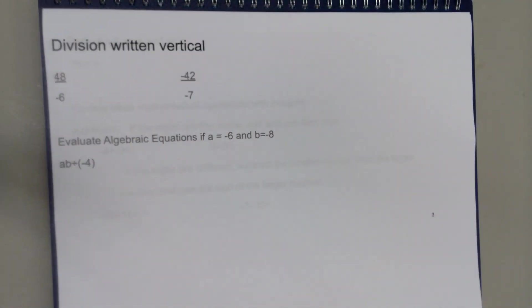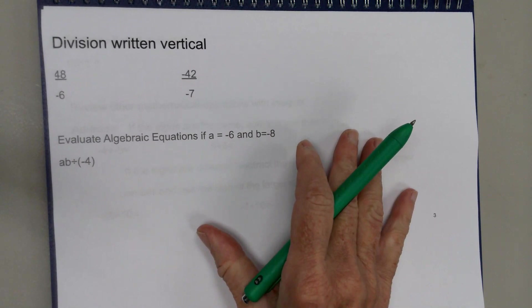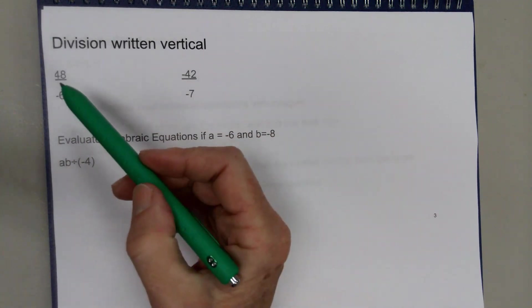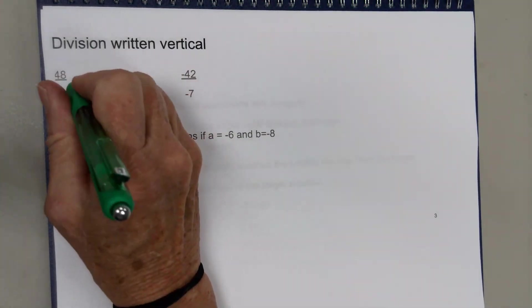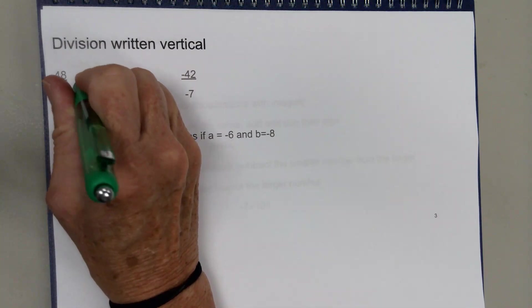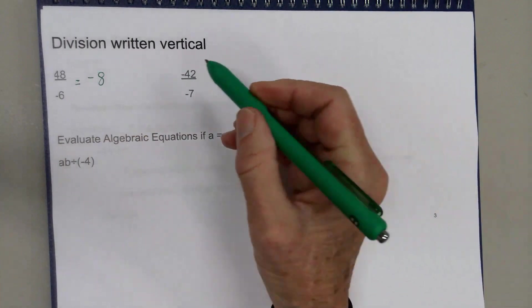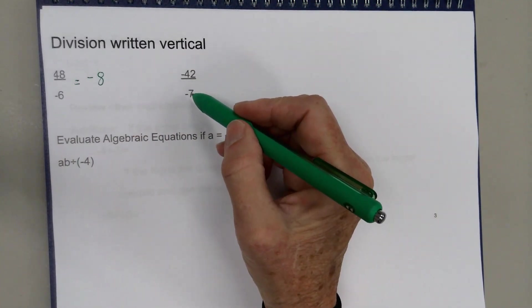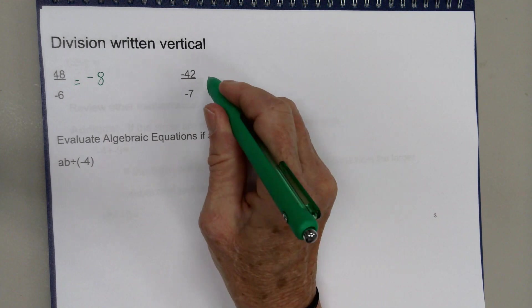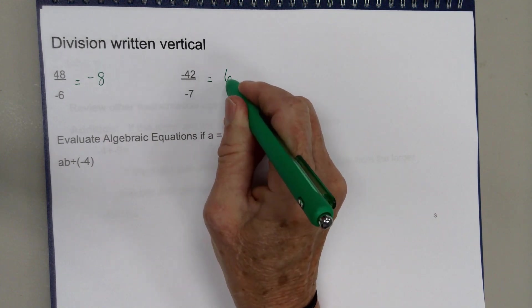The division problem can also be written up and down — it doesn't have to be written to the side. For example, 48 divided by negative 6: the signs are different, so the answer is negative 8. And negative 42 divided by negative 7: the signs are the same, so the answer is positive.